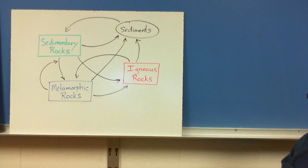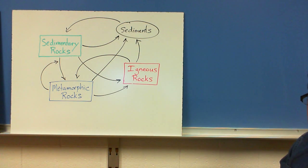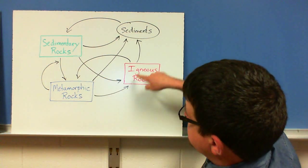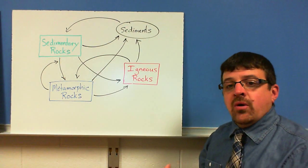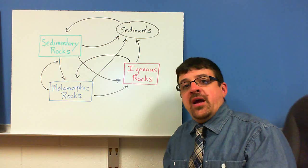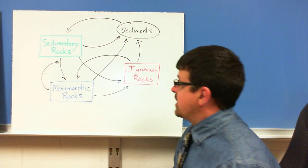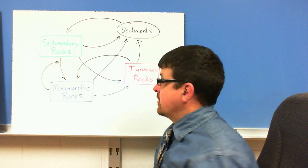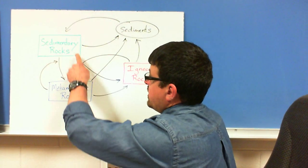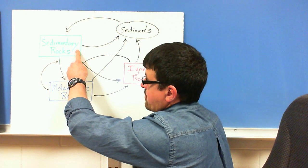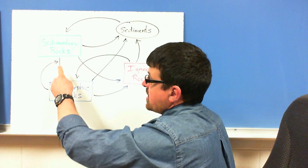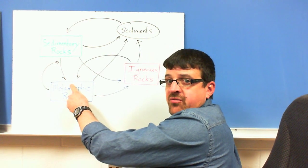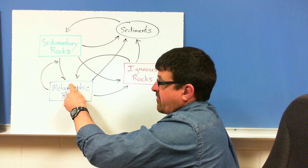This is called the rock cycle — it's called the rock cycle because the rocks just kind of cycle around. They don't have to follow a particular path. If you have a sedimentary rock and it undergoes heat and pressure — not enough to melt it — you're going to have a metamorphic rock.